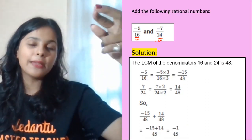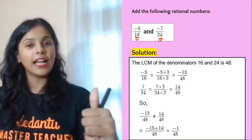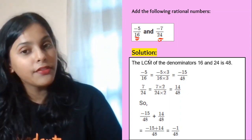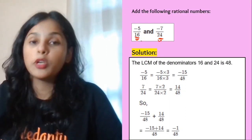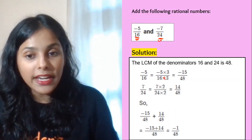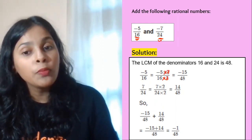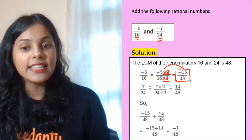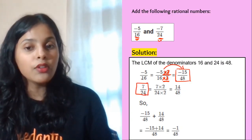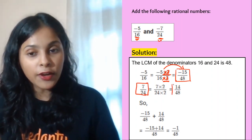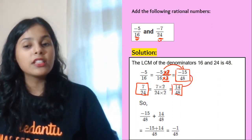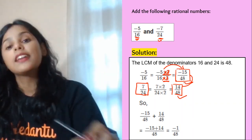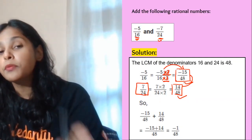The LCM of 24 and 16 is 48. To make the denominator 48 from 16, we multiply 16 by 3 — because 16 × 3 = 48. Since we're multiplying the denominator by 3, we must multiply the numerator by 3 as well. Now we have minus 15 by 48, and for the second number 7 by 24, the LCM gives 14 by 48. Now denominators are equal and we can easily add the rational numbers.